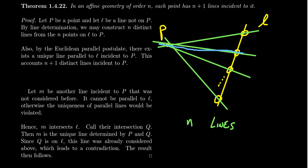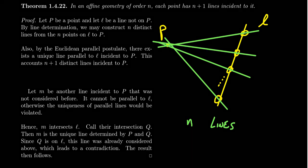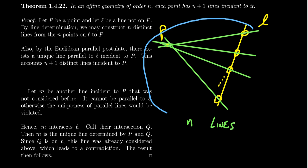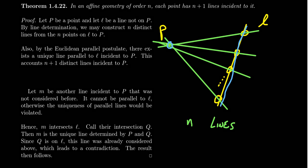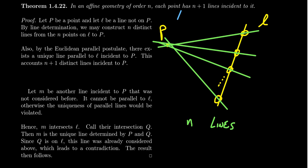Why are these n lines all different? If one of these constructed lines intersected L at two different places, we'd have two lines containing those two points, violating line determination. So all n lines must be distinct. The diagram at this point looks basically like fan geometry — a subgeometry inside the affine geometry. This gives us n lines on P. Where does the extra one come from? The Euclidean parallel postulate: taking line L and point P not on L, we form a unique line parallel to L through P, giving n+1 lines total.